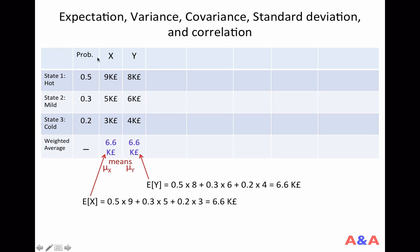We had two random variables, x and y. X is the sales of your brewery, your beer company, and y is the sales of your creamery, your ice cream company.